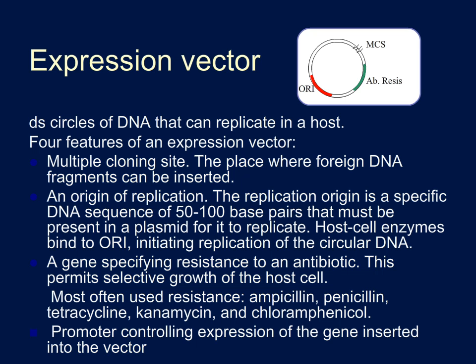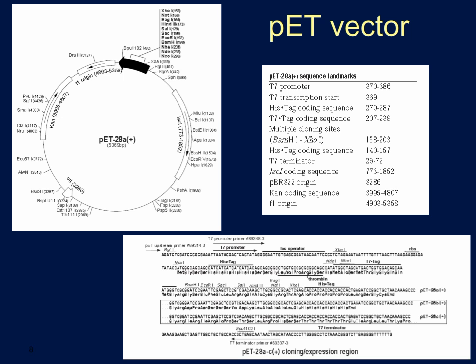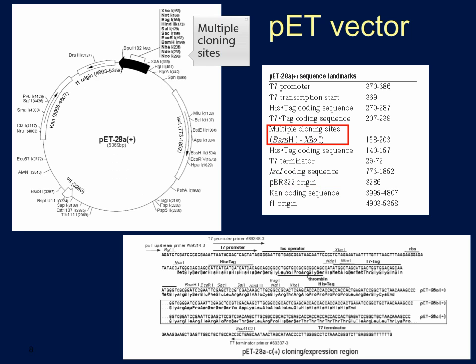Cloning vectors do not require the gene of interest to be under an inducible promoter, but expression vectors do. This slide shows a schematic, or vector map, of the vector PET-28, which is a commonly used vector in molecular biology and protein expression. It is not the vector that you're using in lab, but is a good example to show the different components of a vector, specifically an expression vector. On the map at the top left, you should be able to identify three of the four required elements: the gene that encodes kanamycin resistance, the origin of replication, and the multiple cloning sites.